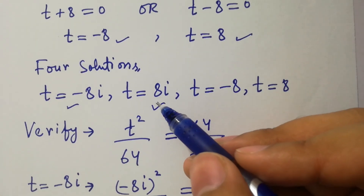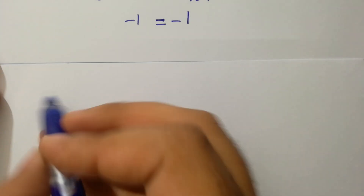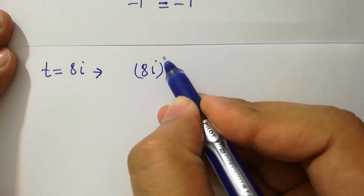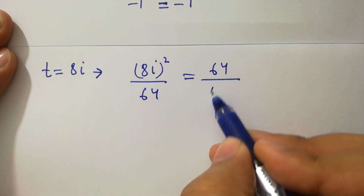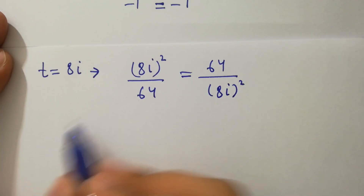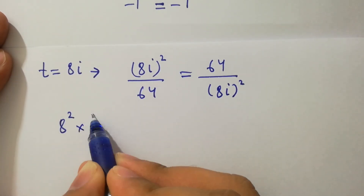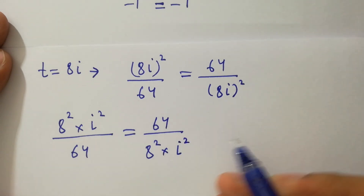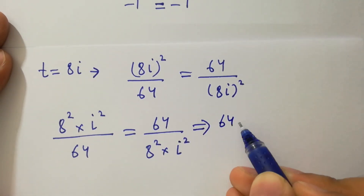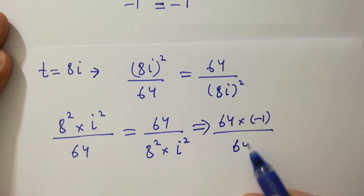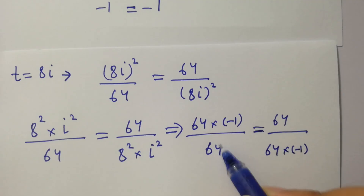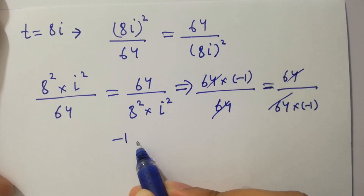For t equal to 8i, substituting into t squared over 64 equal to 64 over t squared, we have 8i squared over 64 equal to 64 over 8i squared. That gives 8 squared times i squared over 64 equal to 64 over 8 squared times i squared. Since i squared equals minus 1, we get 64 times minus 1 over 64, which gives minus 1 equal to minus 1. Verified.